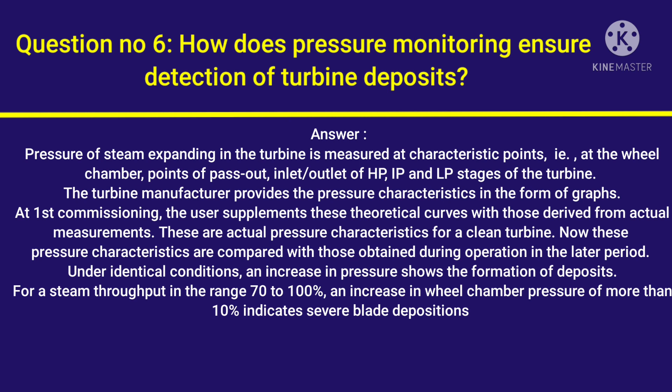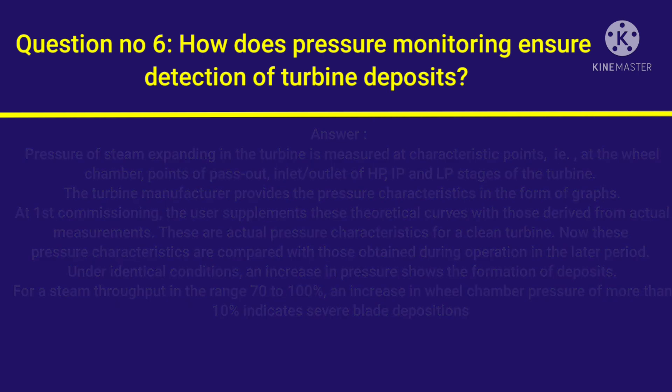Under identical conditions, an increase in pressure shows the formation of deposits. For a steam throughput in the range 70–100%, an increase in wheel chamber pressure of more than 10% indicates severe blade depositions.